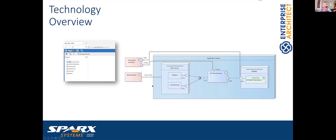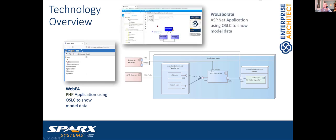WebEA is a web application which is more or less just a dynamic viewer on the model we have in our model repository. It's a PHP application using the OSLC interface. Prolaborate is also a web application, but its purpose is more to have a dashboard-like collaboration tool for those interested in the model data but who cannot or will not use the Enterprise Architect client. It's an ASP.NET application also using the OSLC API from the Pro Cloud Server.